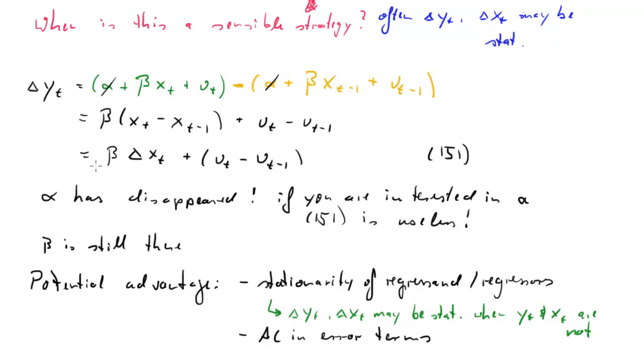So it could be that delta yt and delta xt may be stationary when yt and xt are not. And that would mean that here our dependent variable and our explanatory variable would then be stationary variables, which means all our regression theory for time series analysis would apply to 151 but not to 149.